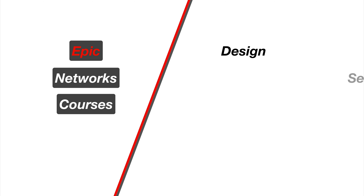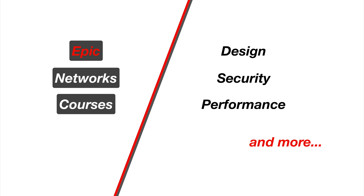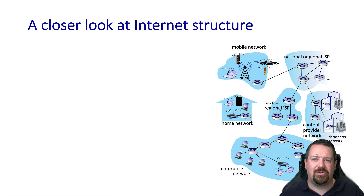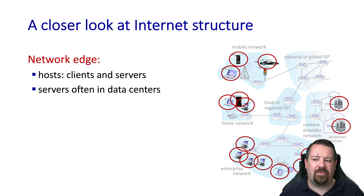In today's video, we'll be discussing the internet edge, including topics such as last mile networks, hosts, and physical media types. We're going to pick up where we left off last time in Chapter 1 of Kurose and Ross. This section is talking about the network edge, so let's take a closer look at the structure of the internet. The structure of the internet is composed of several parts.